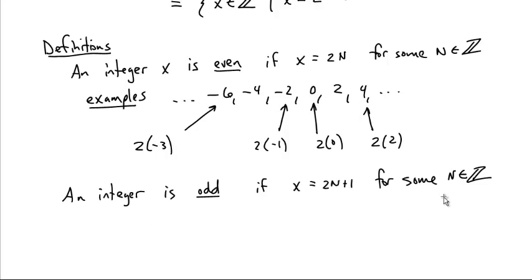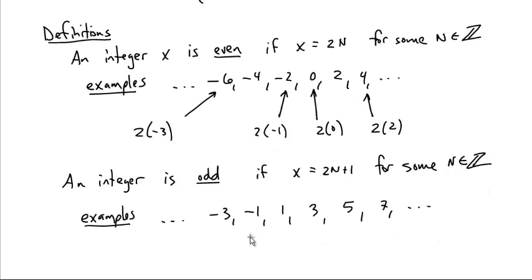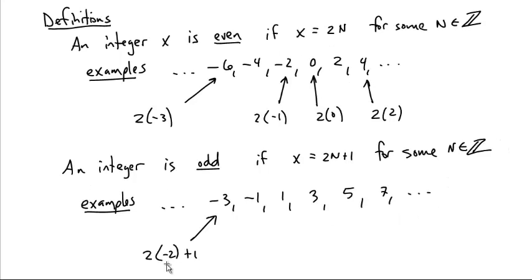Compare this to the odd integers. The odd integers are 2 times something plus 1, where that something is an integer. For example, negative 3, negative 1, 1, 3, 5, 7, basically all of the not even integers. What is negative 3? Negative 3 is 2 times negative 2, negative 4, plus 1. That gives you negative 3. And 1 is 2 times 0 plus 1. And 5 is 2 times 2 plus 1. And 7 is 2 times 3 plus 1. So this is going to play a role later on in another class. The difference between even numbers and odd numbers. Even numbers are 2 times something. Odd numbers are 2 times something plus 1.